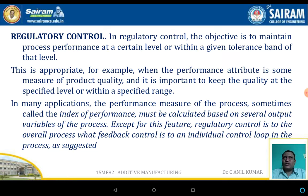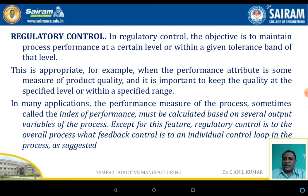The first type is the regulatory control system. In the regulatory control system, the main objective is to maintain the process performance at a certain level within a given tolerance band. This is appropriate when the performance attribute is some measurable quantity of the product, and it is important to keep the quality at a specified level within a specified range.